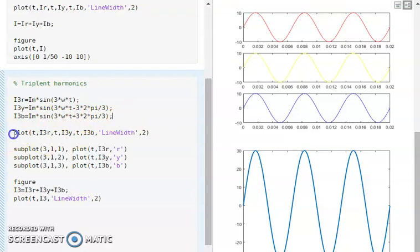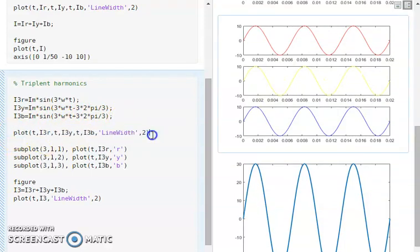Then I plotted all the three components against the time and here you can see this is the R phase current, this is the Y phase current, and this is the B phase current. Here it is very clear that there is no phase difference between the triplet harmonics of R, Y, and B.